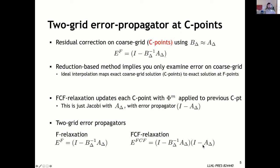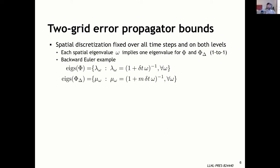To derive error bounds, we make a few assumptions: the spatial discretization is fixed over all time steps on both levels, and each spatial eigenvalue omega implies one eigenvalue for phi and phi_delta. We assume phi and phi_delta can be diagonalized by the same set of eigenvectors. Lambda_omega is an eigenvalue for phi and mu_omega is an eigenvalue on the coarse grid. For backward Euler, the eigenvalue is just (1 + delta-T times the spatial eigenvalue)^{-1}, and on the coarse grid you take a bigger time step.